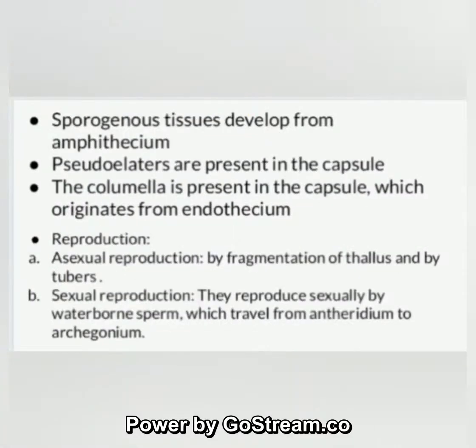Sporogenous tissues develop from the amphithecium. Pseudoelaters are present in the capsule. The columella is present in the capsule, originating from the endothecium. Asexual reproduction by fragmentation of thallus and by tubers; sexual reproduction by waterborne sperm travelling from antheridium to archegonium.